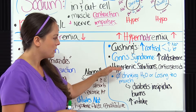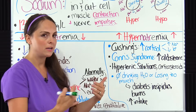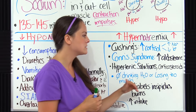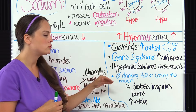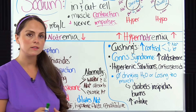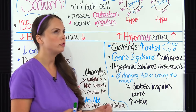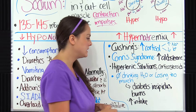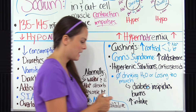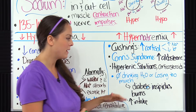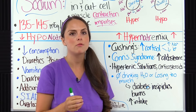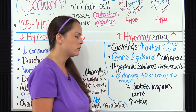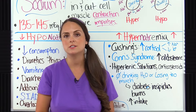Other causes of hypernatremia include hypertonic solutions — giving the patient too much of a salty solution — and corticosteroids. If a patient is not drinking enough water, that can concentrate the sodium in the blood. Losing too much water, as in diabetes insipidus where the patient is urinating excessively, can cause this as well. Burns and increased intake of sodium can also cause hypernatremia.